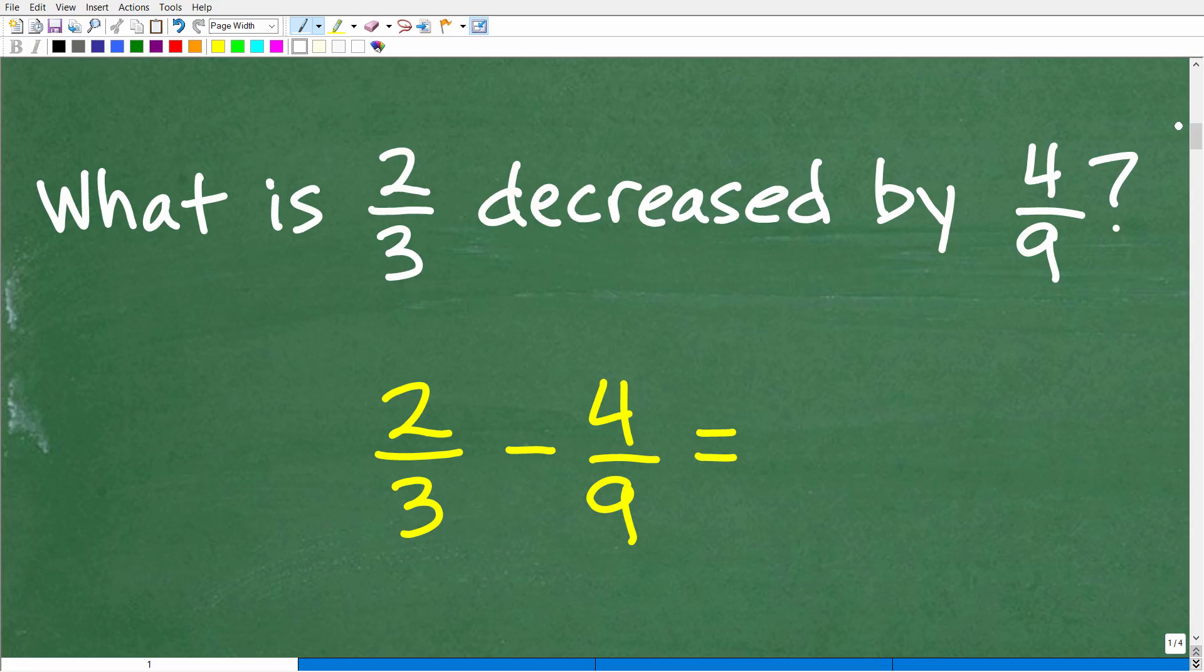So what is two-thirds decreased by four-ninths? Well, we need to interpret what this word decreased means. It implies finding the difference between two numbers. So let's look at a basic example.